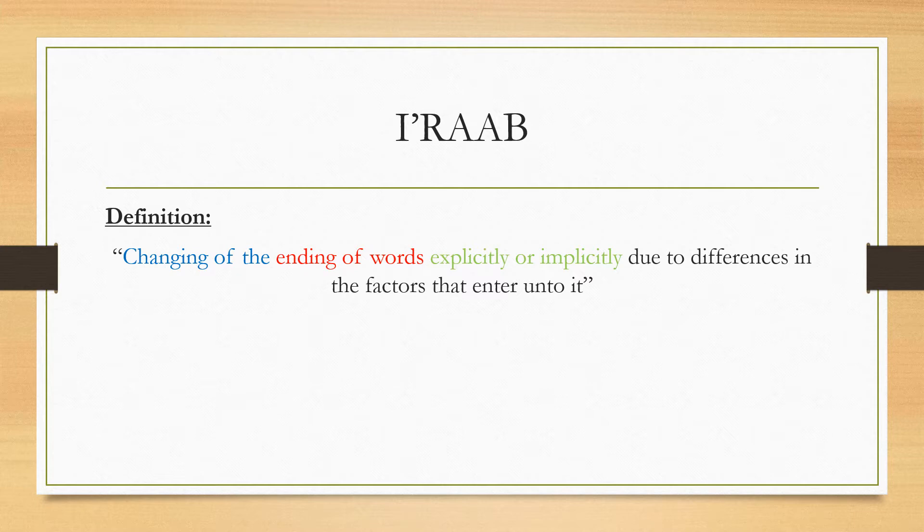The definition of al-I'raab consists of four points. The first point is that there is a changing — a taghyeer — that takes place. Changing of what? Changing at the endings of words. So what is being changed is the endings of the Arabic word.